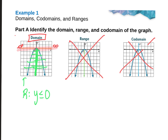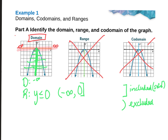So your range is y is less than or equal to 0 — that's how you'd write it in Algebra 1. In Algebra 2, we write that in interval notation, starting from the smallest number, negative infinity, which always has a parenthesis, to the largest number on the graph, which is 0 here. Zero is included, so you put a bracket. If it's excluded, you put a parenthesis. If it's solid, it's included; if it's open or dotted, it's excluded.